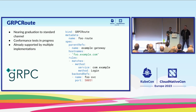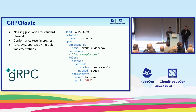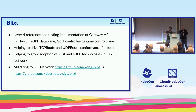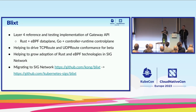gRPC route is one of the routes closest to graduating from experimental to standard channel. We have multiple implementations already. The thing holding us up is that conformance tests for gRPC are different from our other conformance tests, so it's taking more work. Blixt — started by Shane — is a layer-four reference and testing implementation of Gateway API, using Rust, eBPF, Go, and a controller runtime for the control plane. We're hoping to use it to drive the L4 side of the API, since we have tons of L7 implementations but need to kickstart L4 — this is not just an Ingress replacement, it's also an L4 load balancer replacement.